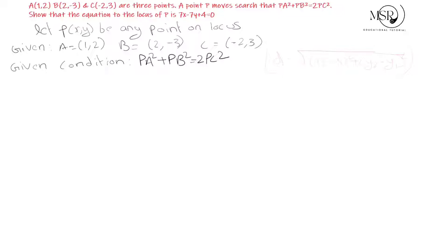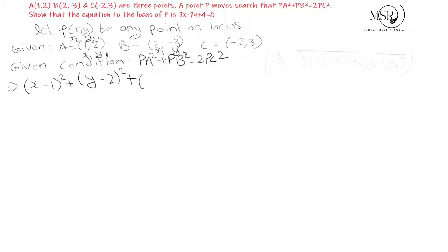First calculate PA²: with P as (x, y) and A as (1, 2), PA² = (x - 1)² + (y - 2)². Then PB²: with B as (2, -3), PB² = (x - 2)² + (y - (-3))² = (x - 2)² + (y + 3)².